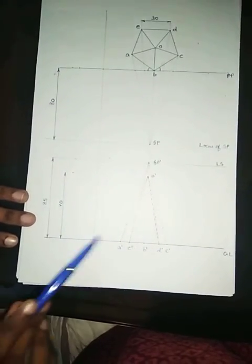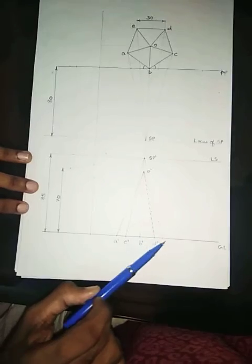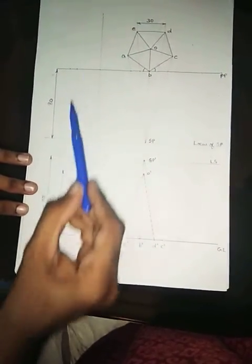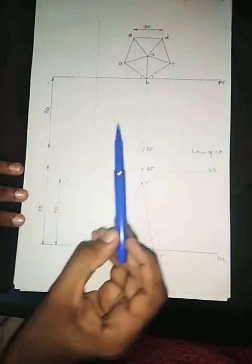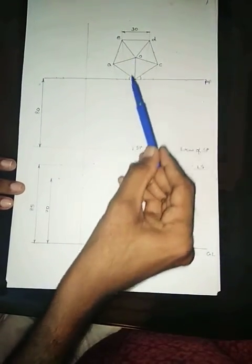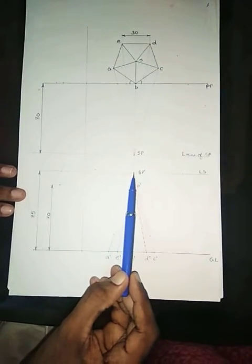As usual you draw the front view here. We will be getting A, B, C, D, O here. We will be getting A', B', C', D', E', and O' here. And as usual the distances are given. Station point is 80mm in front of picture plane, 85mm above the ground, and it is lying on a vertical plane that contains the axis. That means if I am having a vertical plane passing through the axis, the station point will be at that position. So we will be marking station point exactly in front of axis and we will be marking SP' here.